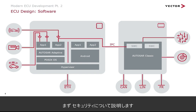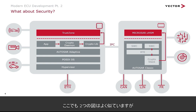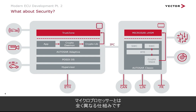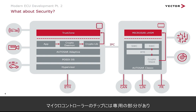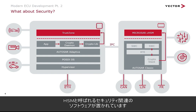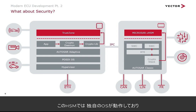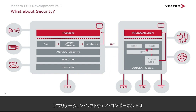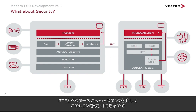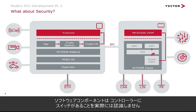Let's start with security. On the microcontrollers, security works totally differently than on the microprocessors. The microcontroller has a dedicated part of the chip where security-related software is placed — a so-called HSM, Hardware Security Module — which runs its own operating system. For example, our MICROSAR VHSM, a specific operating system for security purposes. Application software components can access this HSM via the RTE and our crypto stack, without actually seeing that there is a switch between controllers — this is handled automatically by our software.